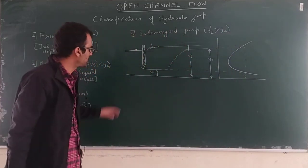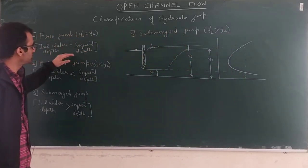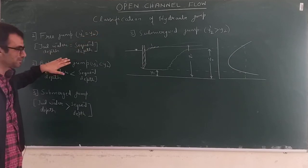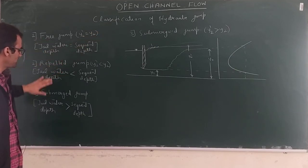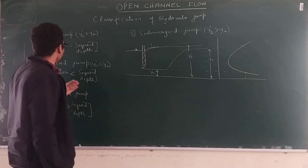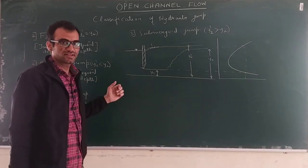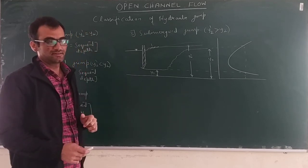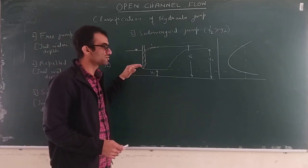These are the three types of hydraulic jumps classified based on the tail water depth: free jump, repelled jump, and submerged jump. Another classification is also there, which is based on the incoming Froude number FR1. We will see that classification in the next lecture.